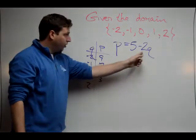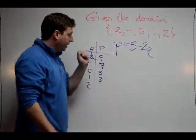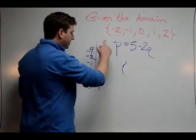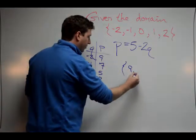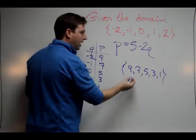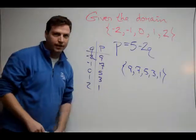When I plug in 2, negative 2 times 2 is negative 4, so 5 minus 4 equals 1. So my range is the P-values: 9, 7, 5, 3, and 1. Pretty simple stuff.